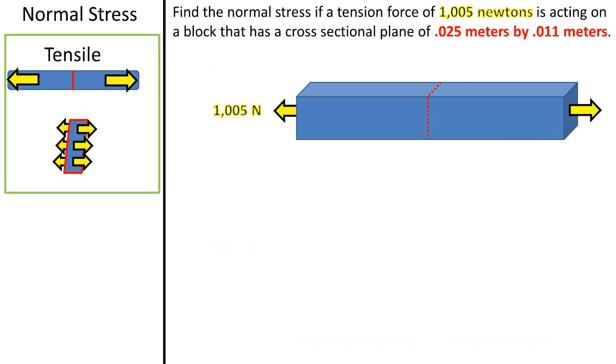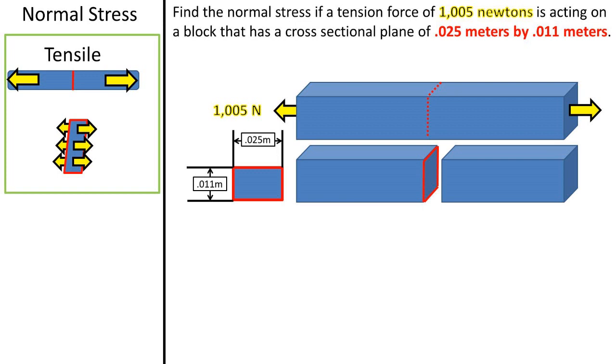Now let's do an example problem. We have a block with a tension force of 1,005 newtons acting on it. It has a cross-sectional area of 0.025 meters by 0.011 meters.